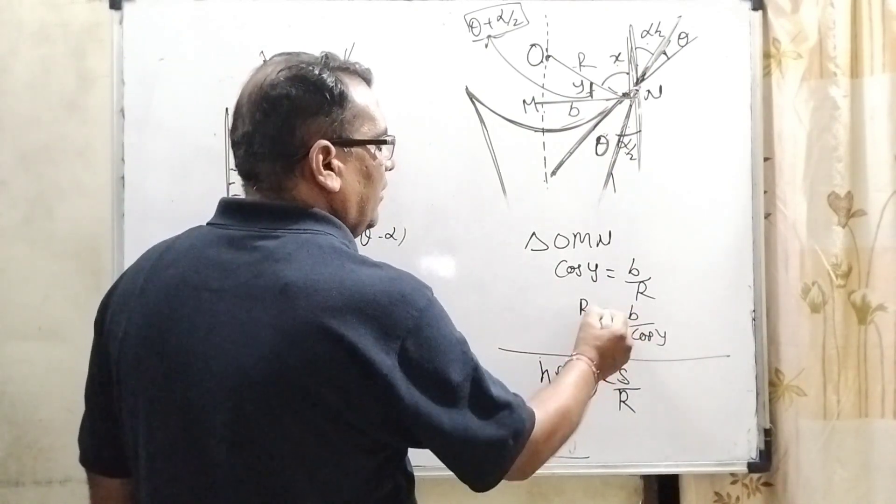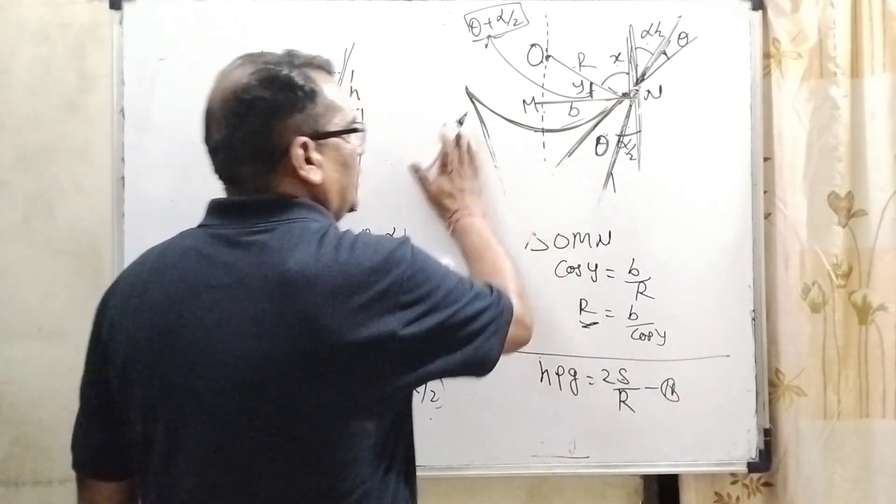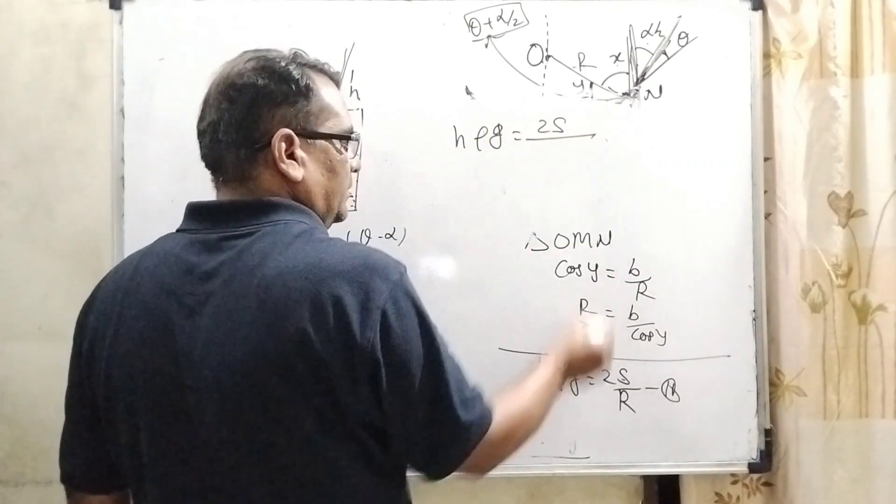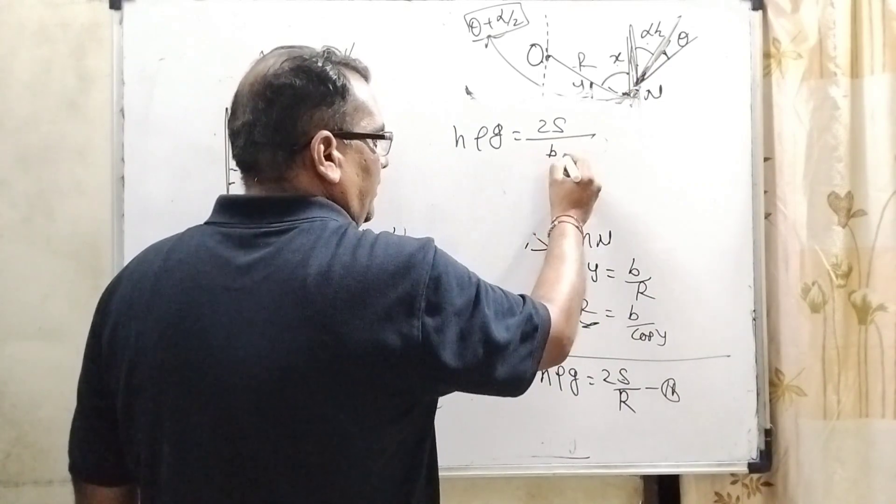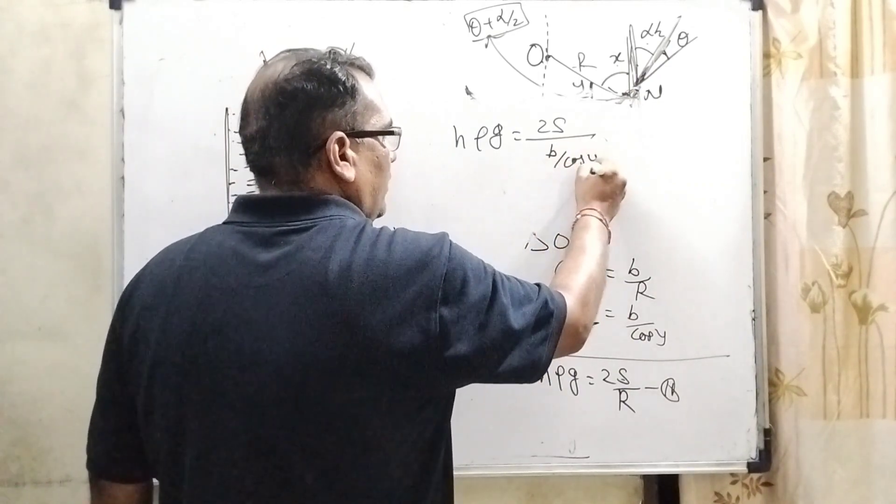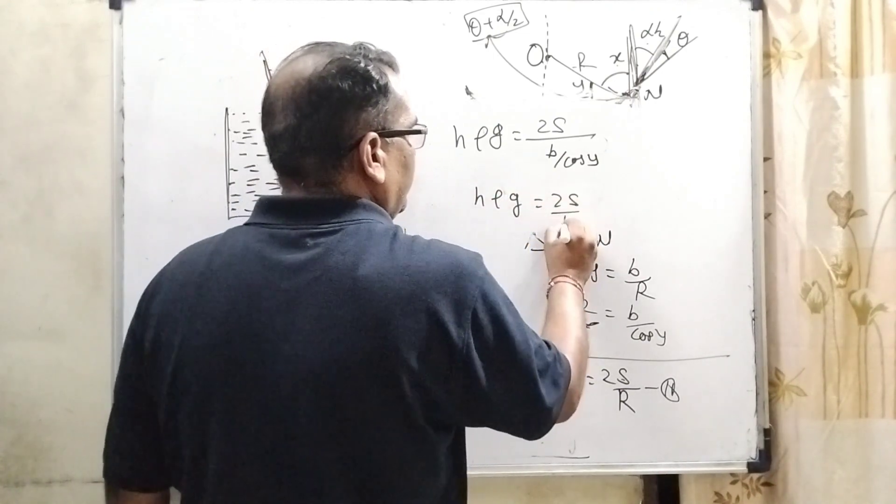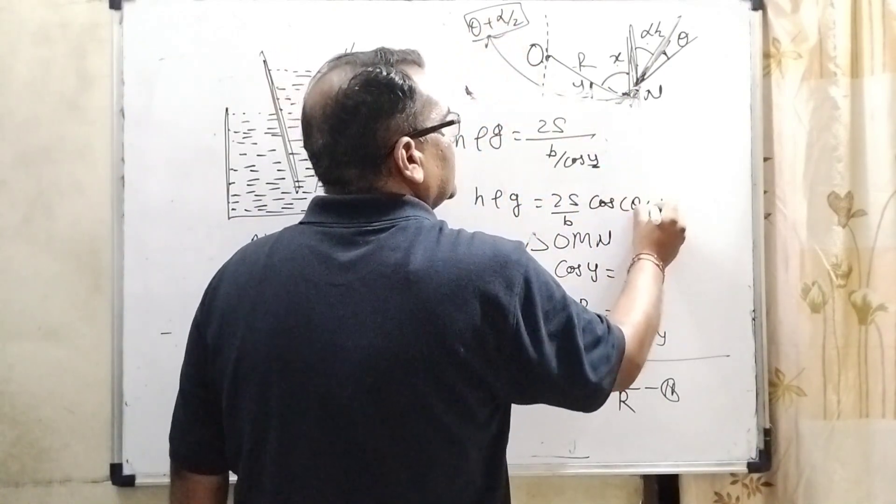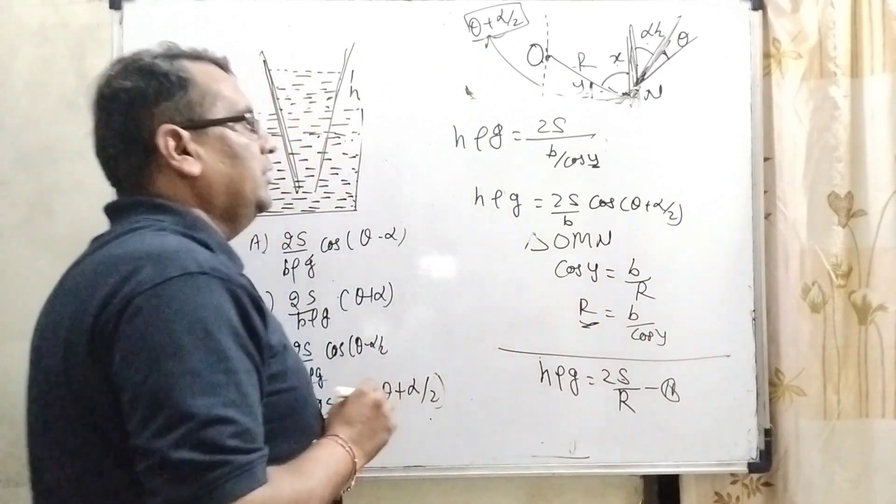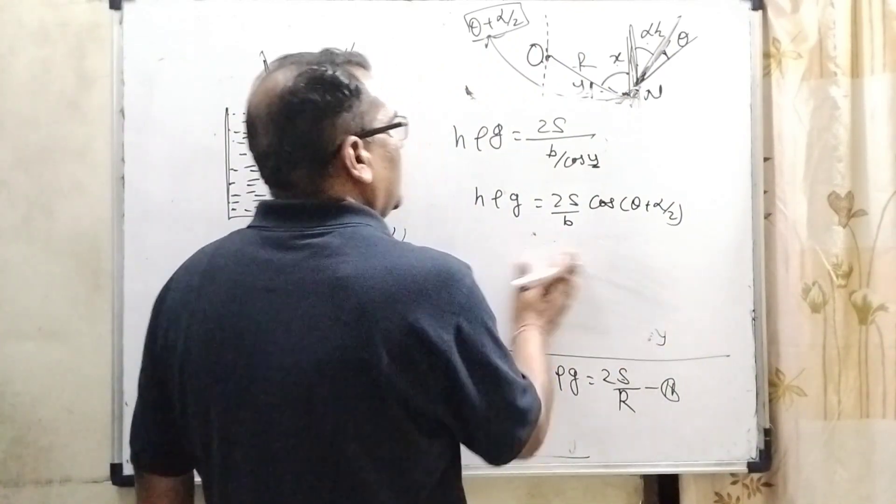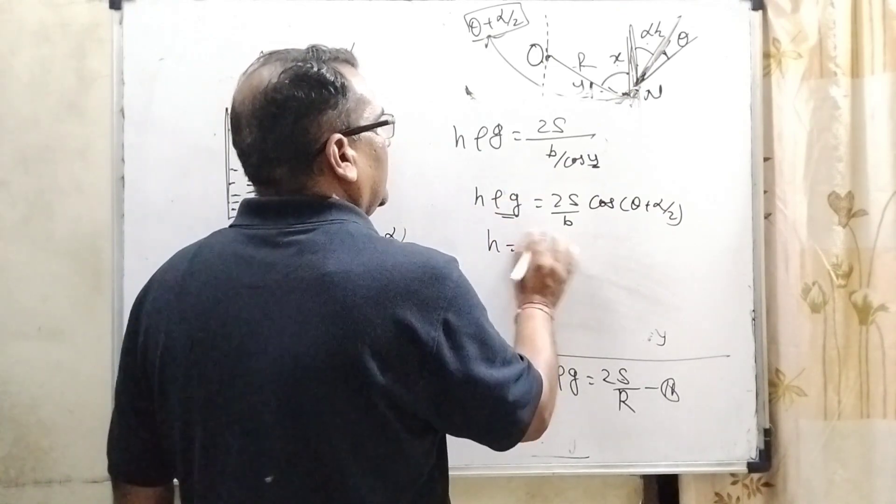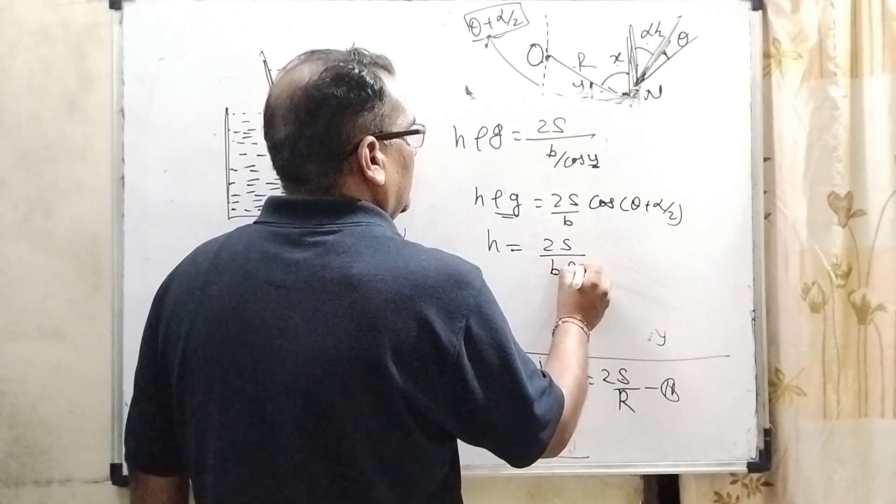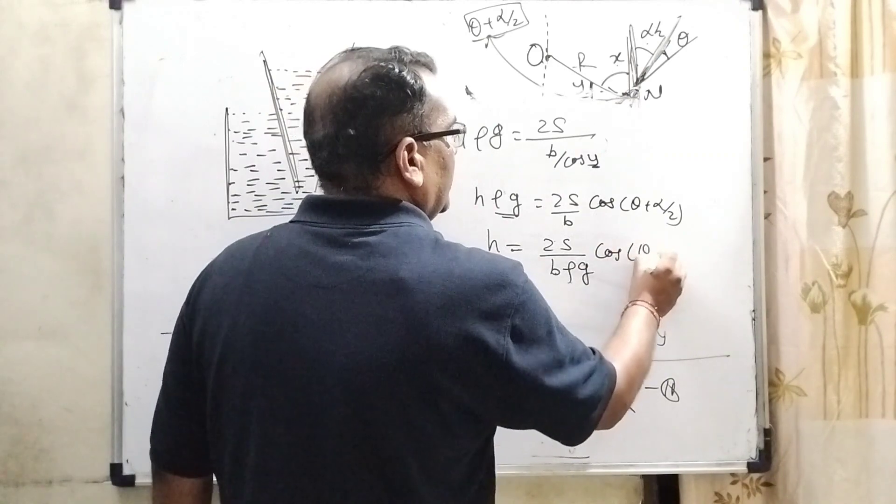Now, substitute this value of R in this equation. So, now, H rho G equals 2S upon, what is the value of R? B upon, B upon cos Y. H rho G equal to 2S by B cos, what is the value of Y? Theta plus alpha by 2. Here, theta plus alpha by 2. We have already found out the value. Okay. So, now, transposing this rho and G goes to the denominator of the right side. H equals 2S by B rho G cos theta plus alpha by 2.